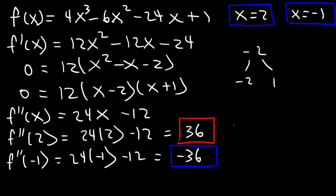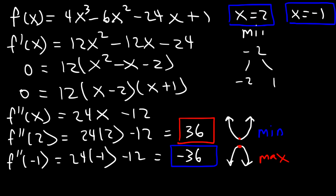At x = 2, the second derivative is positive, so it's concave up — which is associated with a minimum. At x = -1, the second derivative is negative, so it's concave down — which is associated with a maximum. Therefore, we have a minimum at x = 2 and a maximum at x = -1.